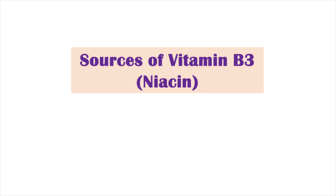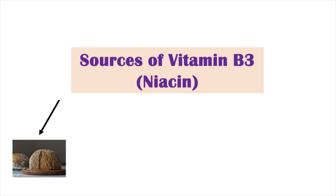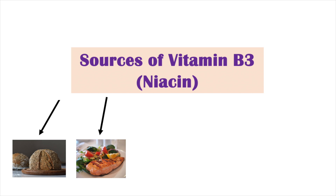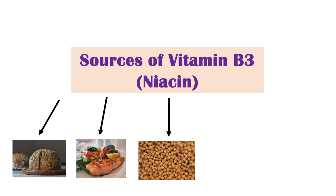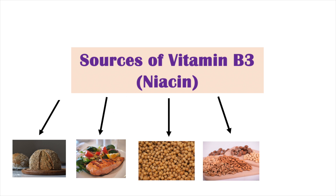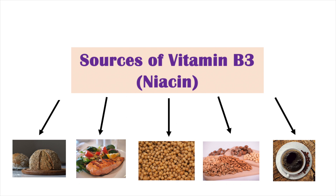The dietary sources of vitamin B3 include fortified cereals and grains — cereals and grains that have had niacin added to them artificially. We can also find it in meat and fish, legumes, and to a lesser extent in nuts, tea, and coffee.